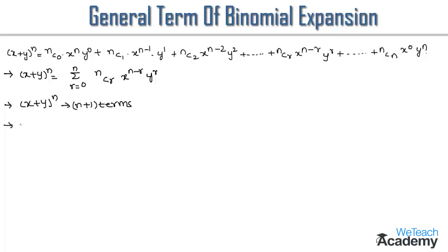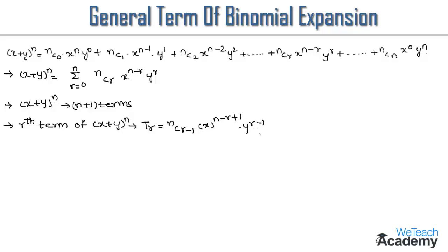The r-th term in the expansion of (x+y)^n is given by T_r = nC(r-1) * x^(n-r+1) * y^(r-1). And T_{r+1} = nCr * x^(n-r) * y^r, which is called the general term in the expansion of (x+y)^n.